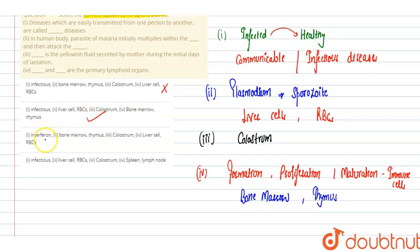We will check the last third option also. First is interferon. Interferons are the chemicals, these are molecules which attack the virus-infected cell, so this becomes incorrect. Next is infectious, liver cell RBC, colostrum - that is correct. Spleen and lymph node - this is incorrect because these are secondary lymphoid organs, not primary. So this is also incorrect. Option B is correct.